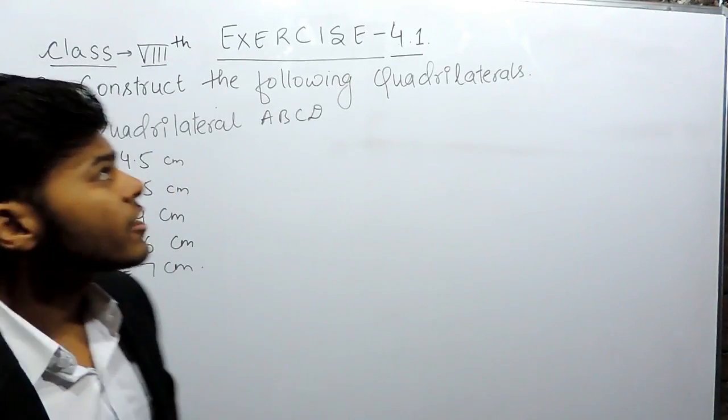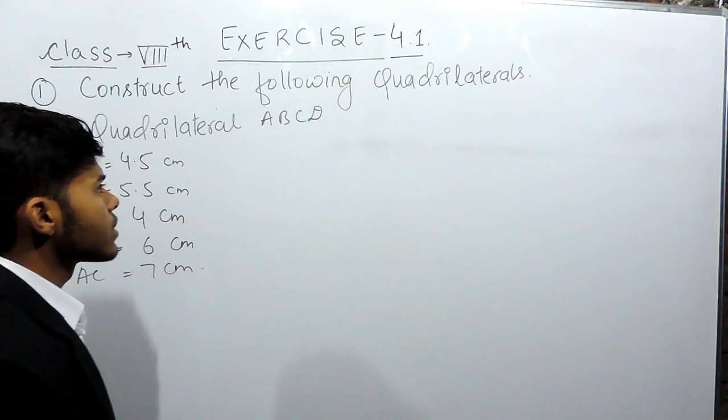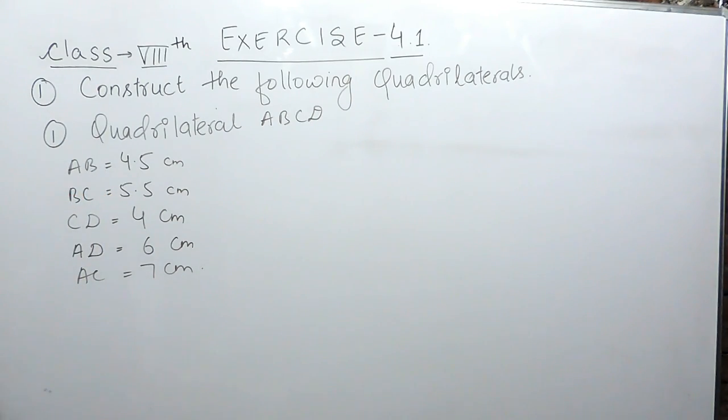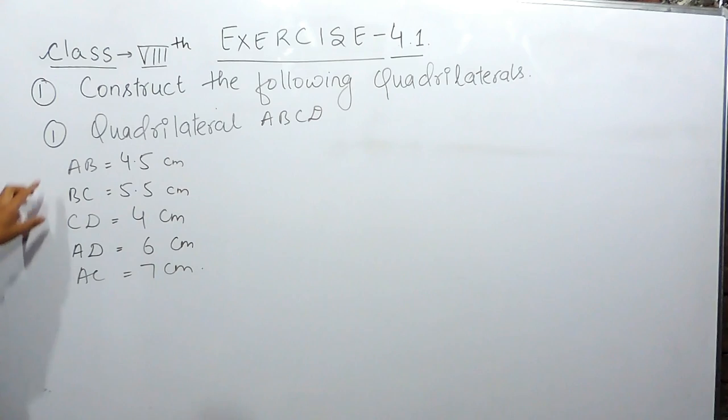Hello everyone, this is the first question of exercise 4.1 and the chapter is of constructions. The first question says that we have to construct the following quadrilateral. A quadrilateral is a closed figure of four sides. Now, these following things are given to us.